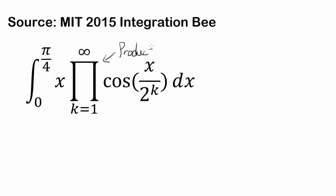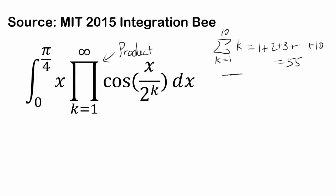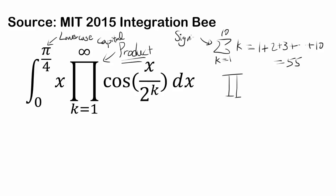Capital Pi denotes a product, whereas sigma denotes the sum. So remember when you have sigma from k equals 1 to 10 of k, you're plugging values into k and adding them up — all the way to plus 10, giving you 55. But now we have capital Pi. Lowercase pi is the ratio of circumference to diameter, 3.14159 and so on. Capital Pi denotes a product, just like sigma denotes the sum.